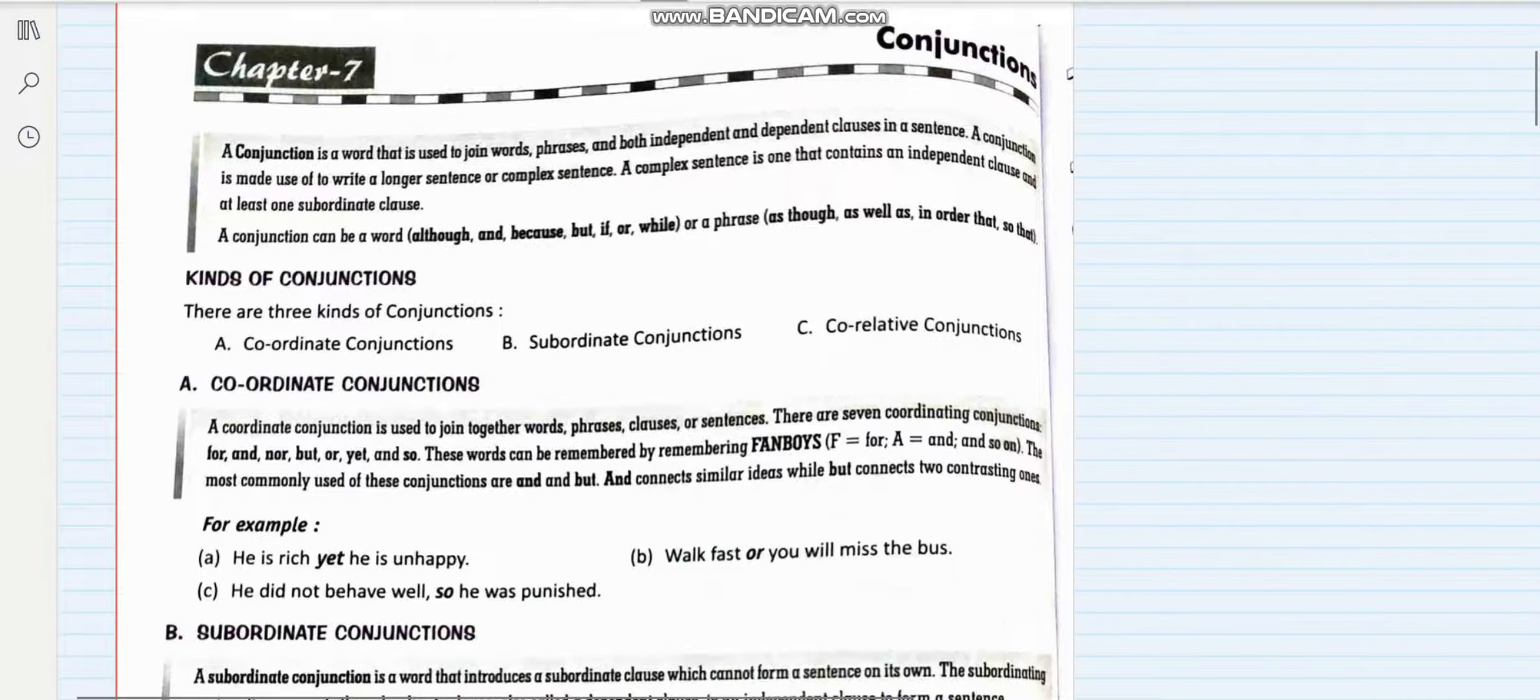So let us see what a conjunction is. A conjunction is a word that is used to join words, phrases, and both independent and dependent clauses in a sentence. We very well know that conjunctions are the joining words. Now a conjunction is always used to write a longer sentence or a complex sentence.